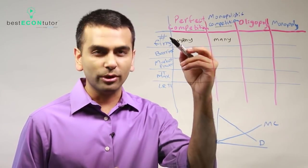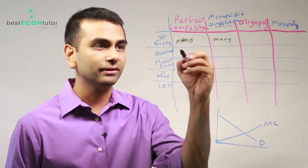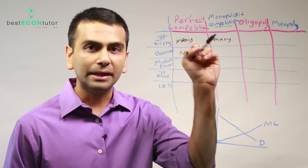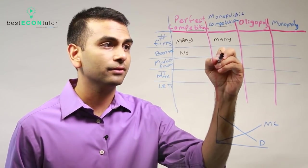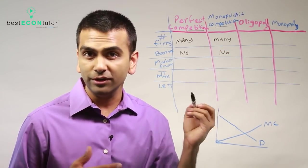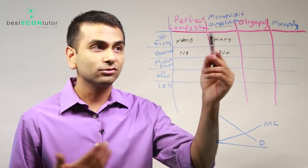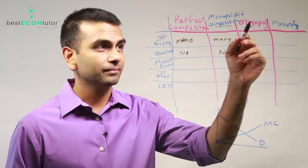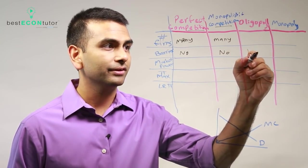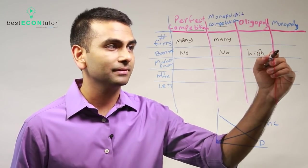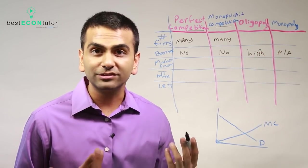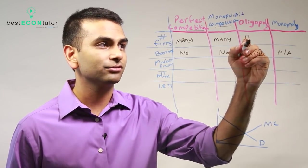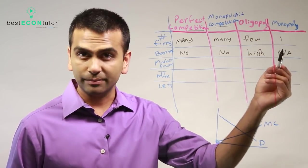This also relates to barriers to entry. In perfect competition there are no barriers to entry, and the same is true for monopolistic competition — no barriers to entry, which is why anyone can enter and why there are many firms. Oligopolies, on the other hand, have high barriers to entry, same with monopolies. In fact, for monopolies it's not even applicable because no one else is allowed to enter. That's why oligopolies have only a few firms and monopolies have just one.